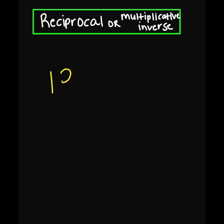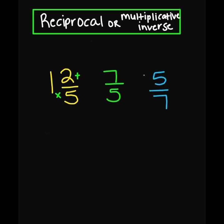What about 1 and 2 fifths? First, we're going to convert this into an improper fraction, and then we find the reciprocal. So 1 times 5 plus 2 — 1 times 5 is 5, plus 2 gives us 7 over 5. The reciprocal of 7 over 5 is going to be 5 over 7, and this is our answer.